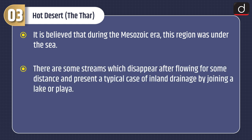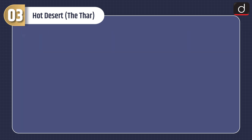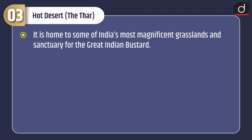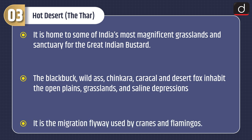There are some streams which disappear after flowing for some distance and present a typical case of inland drainage by joining a lake or playa. The lakes and playas have brackish water which is the main source of obtaining salt. It is home to some of India's most significant grasslands and a sanctuary for the Great Indian Bustard. The blackbuck, wild ass, chinkara, caracal and desert fox inhabit the open plains, grasslands and saline depressions. It is the migration flyway used by cranes and flamingos.